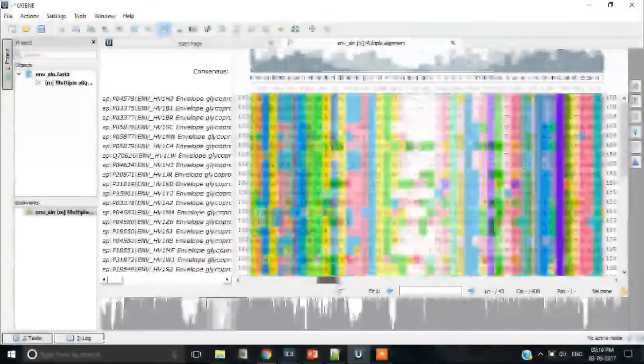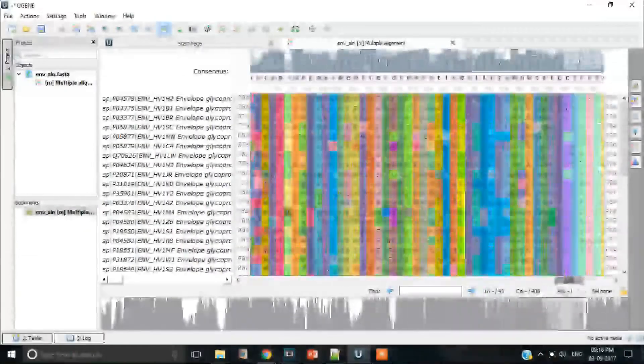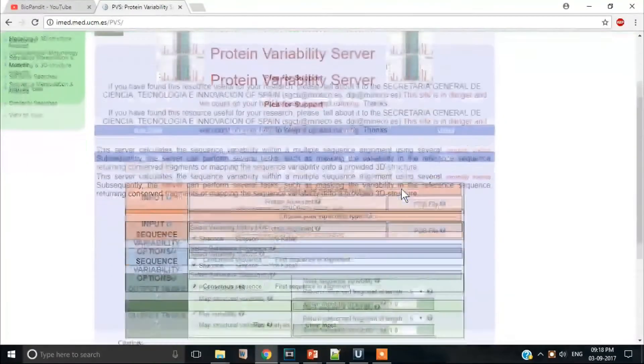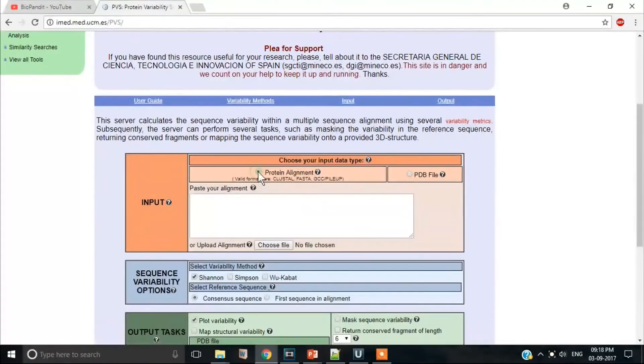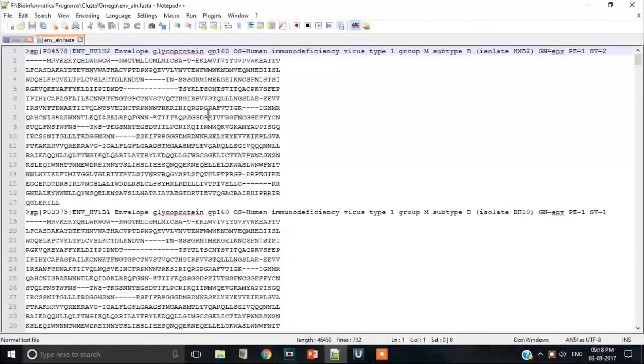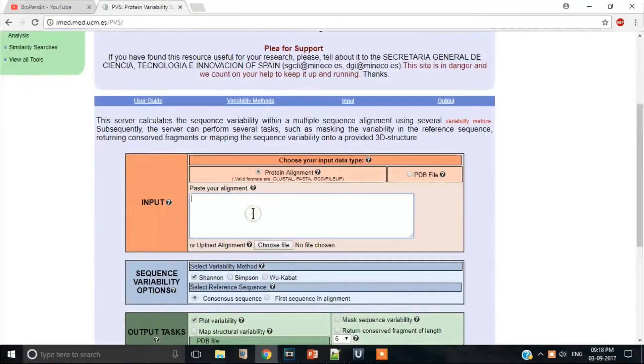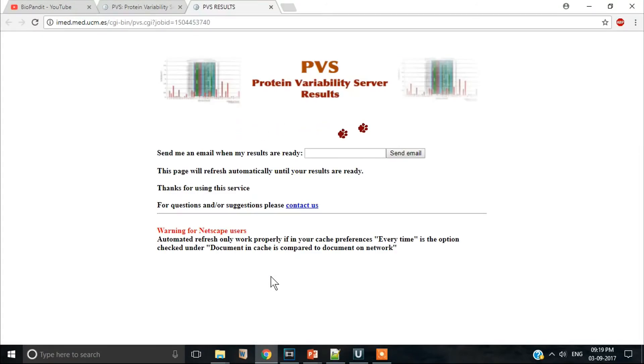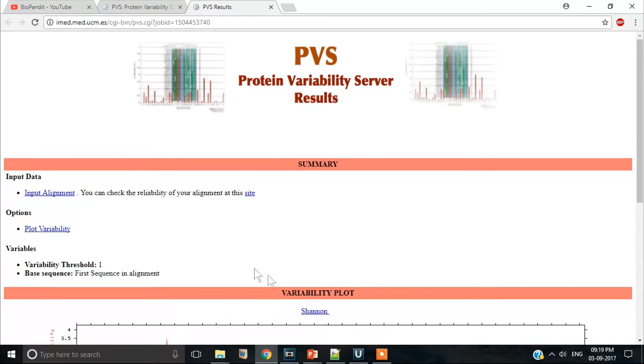Our aim here is to calculate the conservation level of different alignment columns in an alignment. Let us use the alignment of envelope glycoprotein GP160 that we created in our video on multiple sequence alignment. We shall go to protein variability server, select protein alignment, select Shannon, select first sequence as the reference sequence and run analysis.